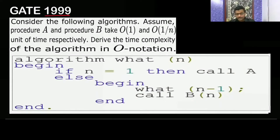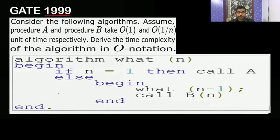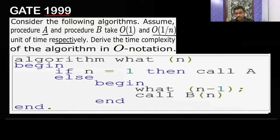This is a 1999 exam question — it is a subjective question. Consider the following algorithm: procedure A takes O(1) time and procedure B takes O(1/n) units of time respectively. So A is going to take constant time O(1), and B is going to take 1/n time.